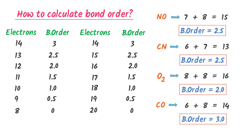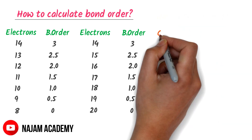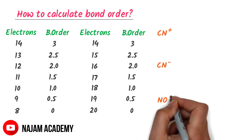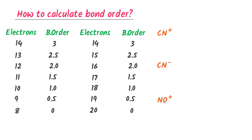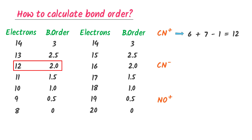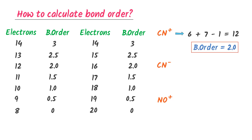Now let me teach you how to find the bond order of ions. Consider these examples. To find the bond order, we have to find the total number of electrons. There are 6 electrons in carbon plus 7 electrons in nitrogen. Now, what about the positive one charge? I change this positive one to negative 1. So there are 12 electrons present in this ion. When there are 12 electrons, the bond order is 2.0. So the bond order of this ion is 2.0.